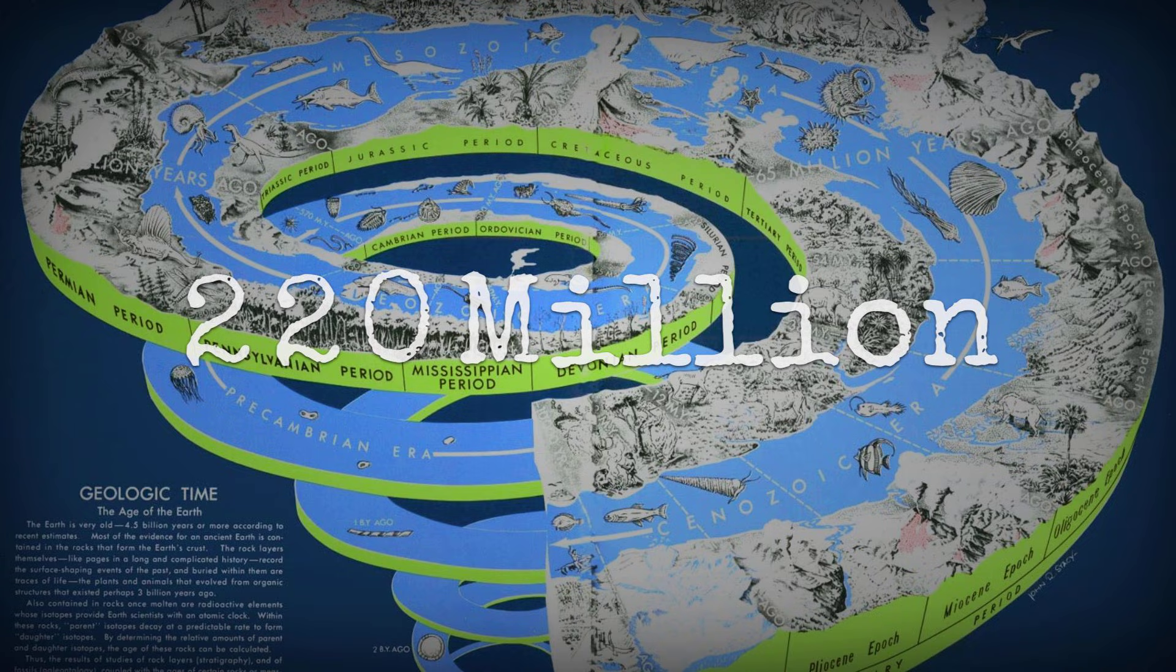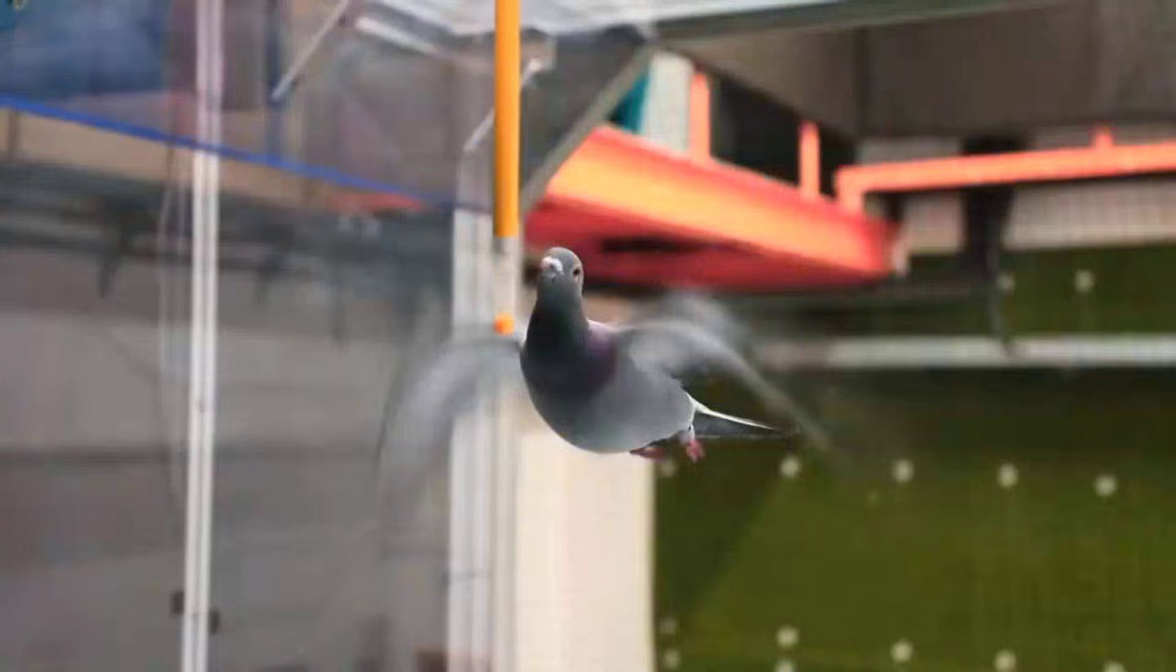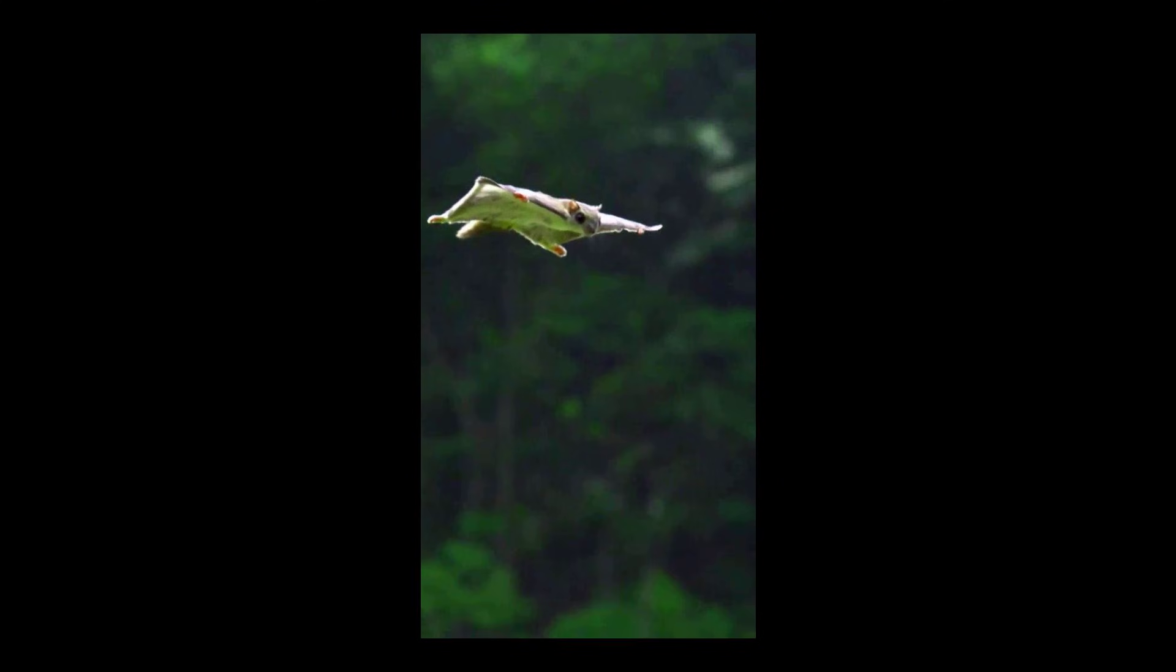For 220 million years, every flying and gliding animal on Earth followed the same blueprint. Wings on the front, arms do the flying, legs do the landing. It is the rule that bats, birds, pterosaurs, and even flying squirrels all obey.